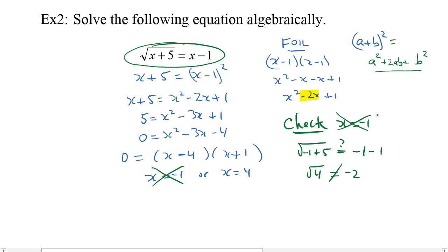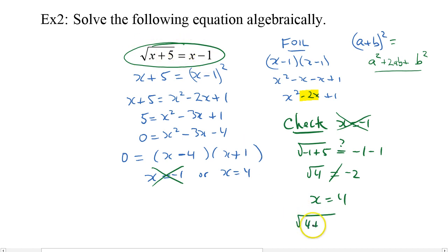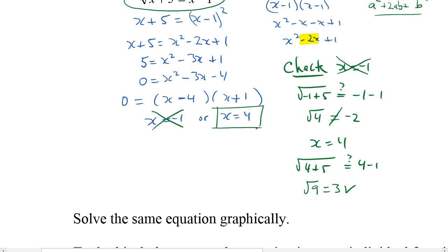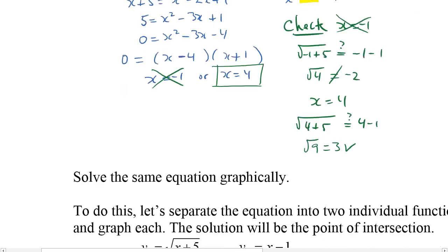We'll do our second check. Now we're going to check x is equal to 4. Going back to the beginning, the square root of 4 plus 5 — is that equal to 4 minus 1? The square root of 9 is equal to 3. We like it. So x equals 4.